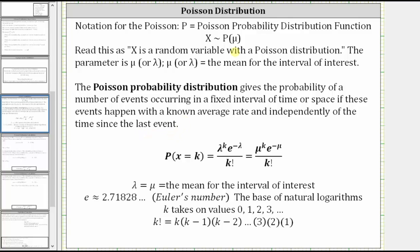We use a notation shown above for a Poisson distribution. We read this as x is a random variable with a Poisson distribution and mu is the mean. Sometimes instead of mu, you will see lambda used. The probability x is equal to k is given by these two quotients here where these are equivalent. The first uses lambda for the mean and the second uses mu for the mean.